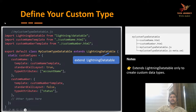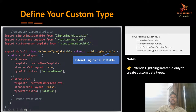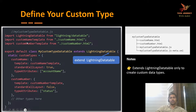The first step is you have to go and create a lightning web component, and that lightning web component will extend the lightning data table. By extending this lightning data table, you can create your own custom types. So for example, this is my component — my custom type data table — and this lightning component is extending the lightning data table. Now in this component I can go and define the custom types.